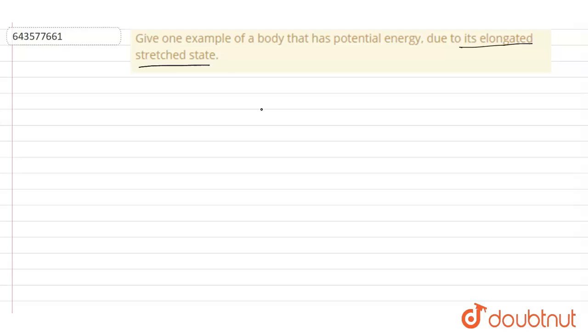Some of the examples of this is a stretched rubber band has potential energy. It does work in restoring itself towards its original state. So a stretched rubber band is an example of a body that has potential energy due to its elongated stretched state.